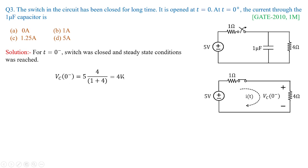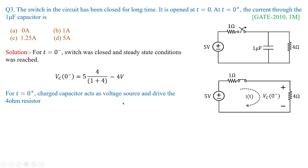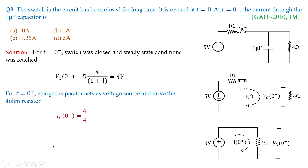Vc(0+) equals Vc(0-) equals 4 volts. This same voltage applied across the 4 ohm resistor gives I(0+) equal to 1 ampere. So option B is the correct answer. The next problem asks for the time constant of the given circuit, which was asked in GATE 2008 for Electrical Engineering for 2 marks, with options 1/9, 1/4, 4, and 9 seconds.